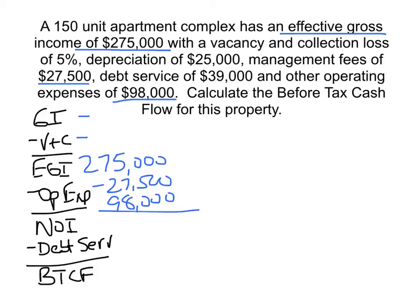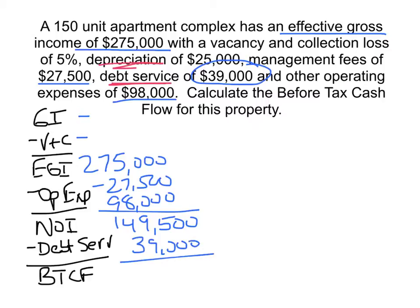Recalling that we can't back out depreciation and we can't back out debt service at this stage. When we do that, we calculate net operating income of $149,500. Then we're going to back out debt service of $39,000 for a before tax cash flow of $110,500.